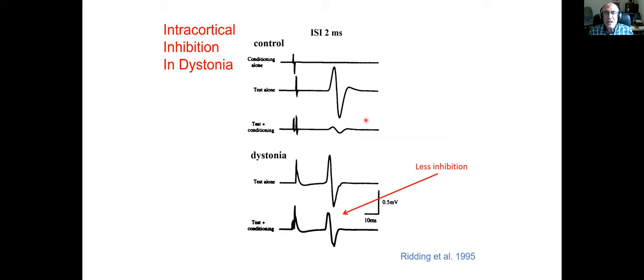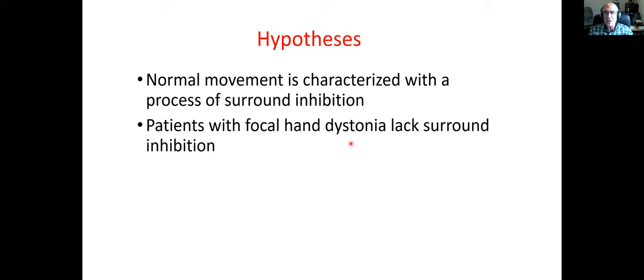This is the short intracortical inhibition. In patients that have dystonia, there is less inhibition — there is some inhibition but it isn't as much reduced as in normal subjects. So the question is: what does a loss of inhibition lead to?